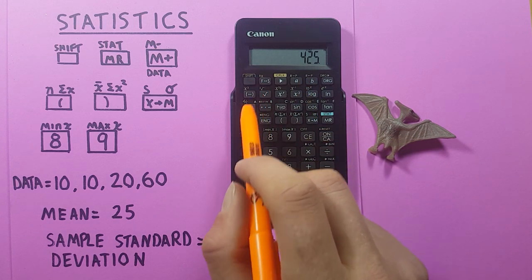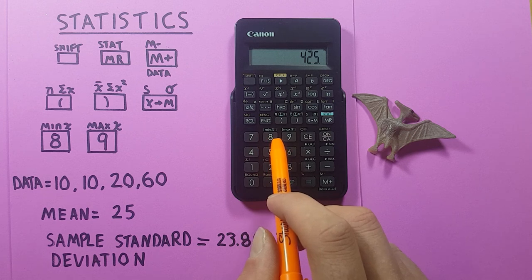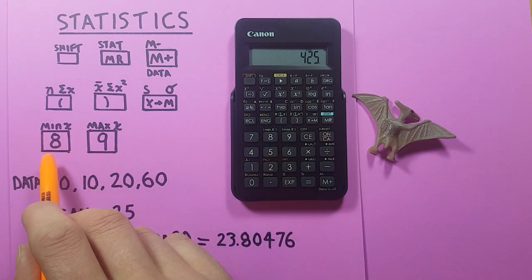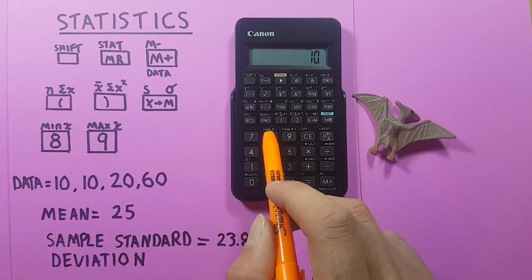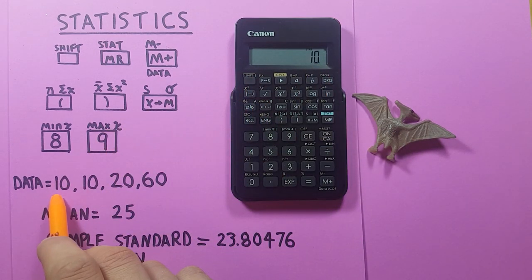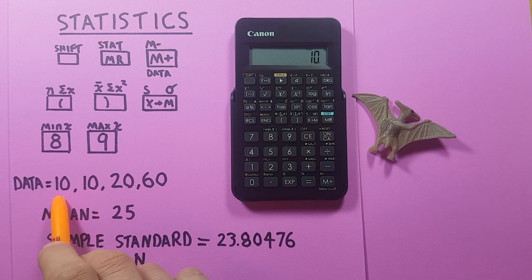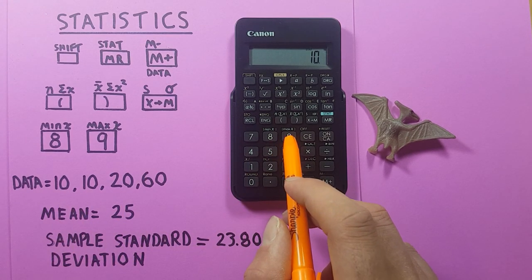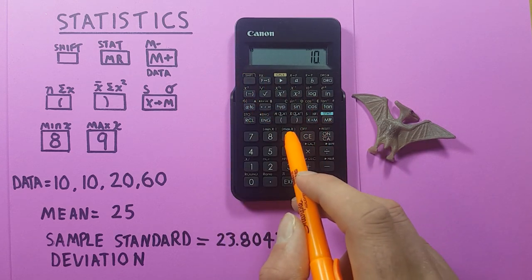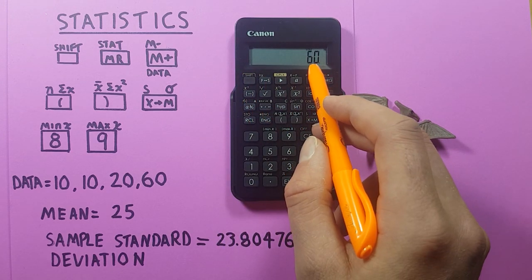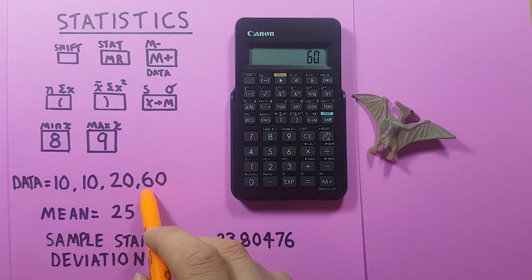We can also find the min X or the smallest number in our data set by pressing the shift 8 key. Shift 8, 10, which is the smallest number in our data set. That makes sense. And the max X or largest number in our data set by pressing the shift 9 key. 60 is the largest number in our data set. So that makes sense as well.